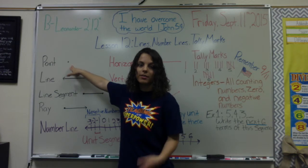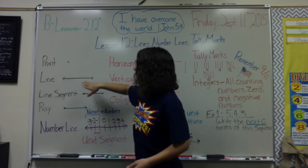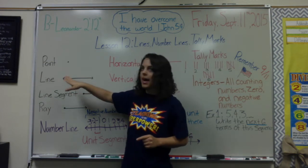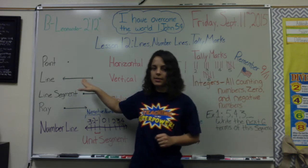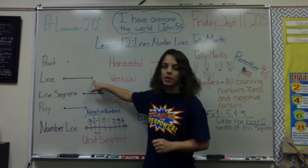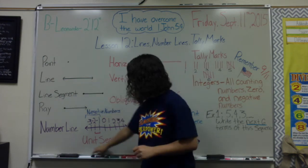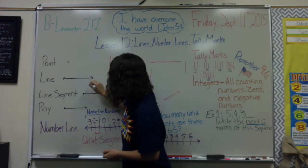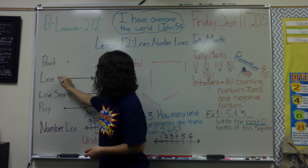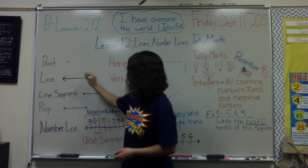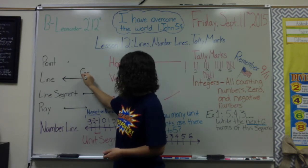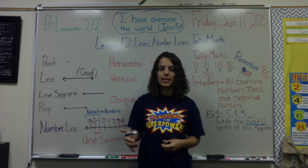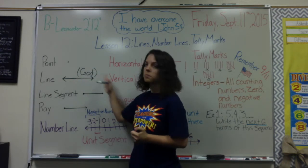A point is simply a point, or if you like to call it, a dot. Now the key thing to remember about lines is that they have no beginning and no end, so we draw arrows to represent that. I have two arrows on both sides because a line has no starting point and no ending point. It's kind of like God — God has no beginning and no end.